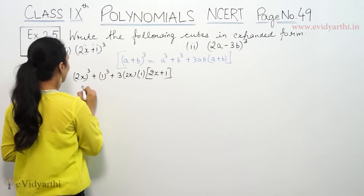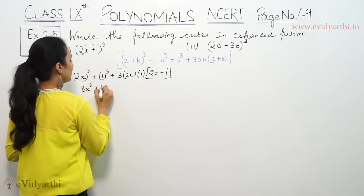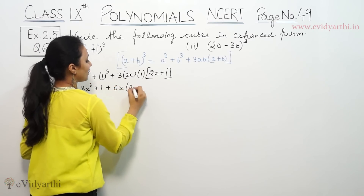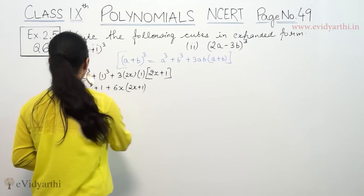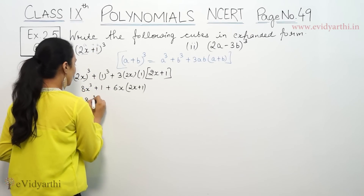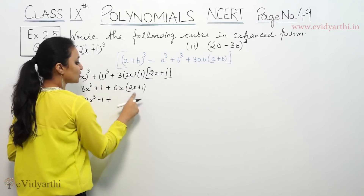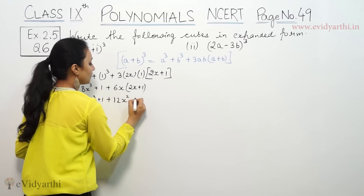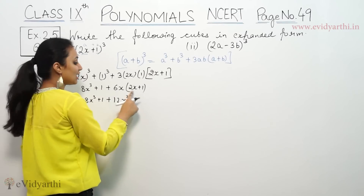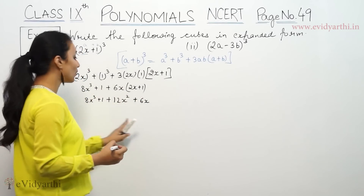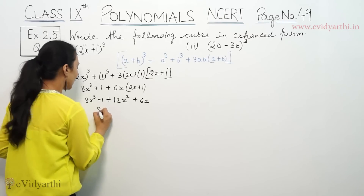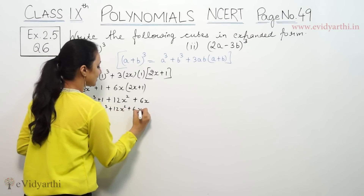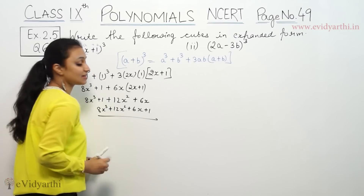So here we have (2x) whole cube plus 1, then 3 times 2 is 6, so 6x, bracket (2x plus 1). So here we have 8x cube plus 1 plus 6x into (2x plus 1), giving 12x square plus 6x. So we have no like terms, and the answer is 8x cube plus 12x square plus 6x plus 1.